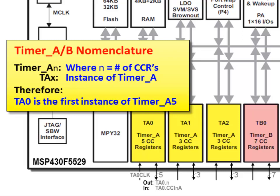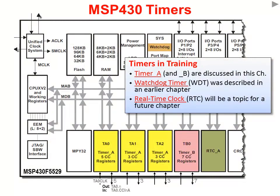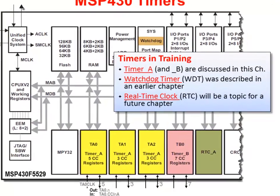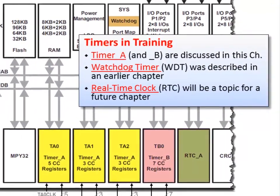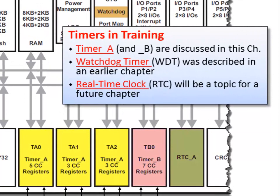TB0, the first instance of Timer B, has seven capture and compare registers. We'll dig into the details of what those capture and compare registers are as we go through this chapter. The Timers in Training call-out box describes where the various timers are discussed in this workshop. Timers A and B are covered in this chapter; we've already covered the Watchdog timer in a previous chapter, and the real-time clock module will be discussed in a future chapter.